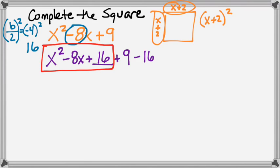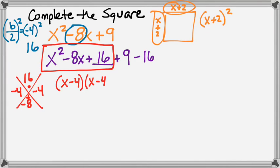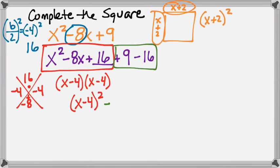That part is a perfect square trinomial. If you do the x-factor chart — 16 on top, negative 8 on the bottom — two numbers that multiply to give 16 and add to give negative 8 are negative 4 and negative 4. Factoring gives you (x minus 4)(x minus 4), but we don't write it twice. We write it as the squared binomial x minus 4 squared.